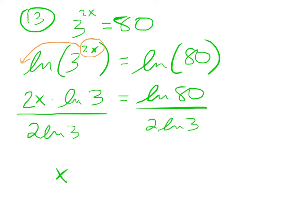So x is the ln of 80 divided by 2 times the ln of 3, which is approximately equal to 1.99.